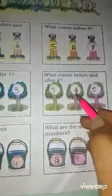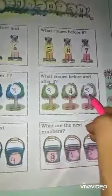What comes before and after 4? Here is the 4. What is the before number? And what is the after number? Yes. Before number is 3. And after number is 5. 3, 4, 5.